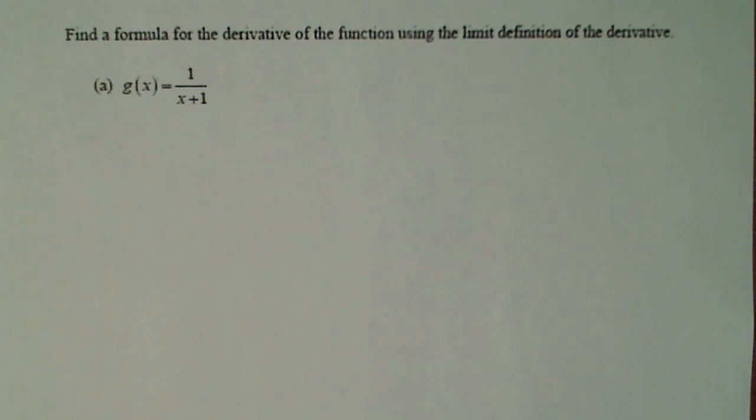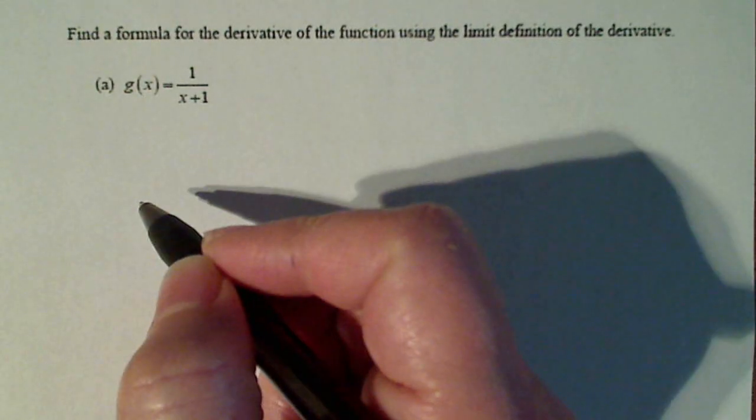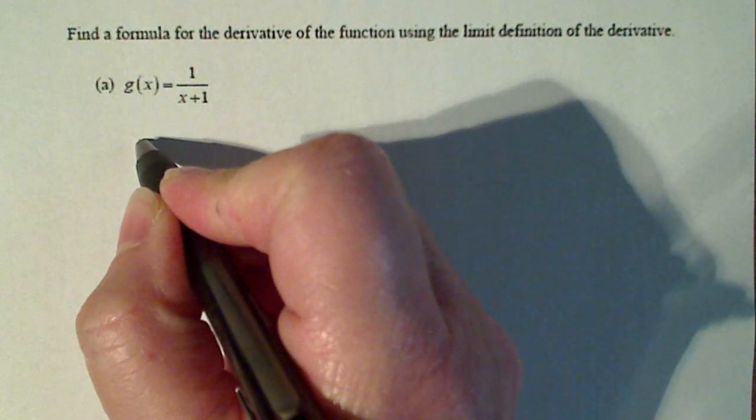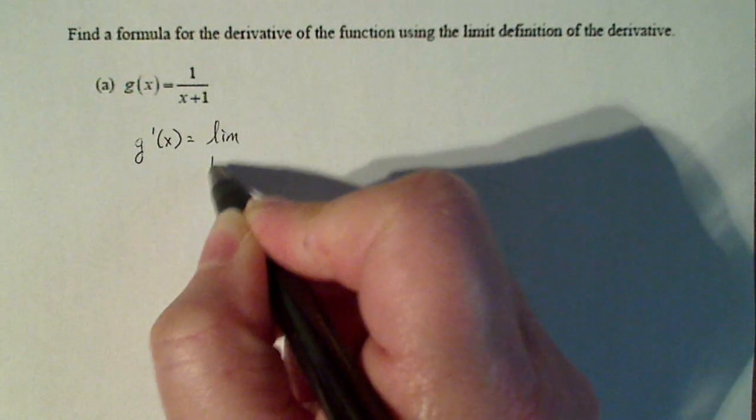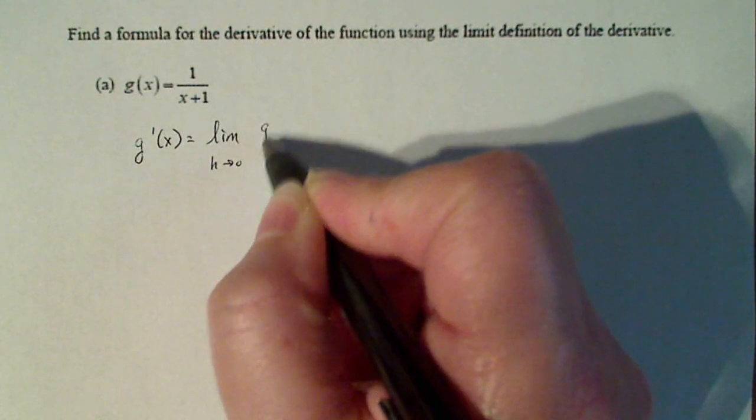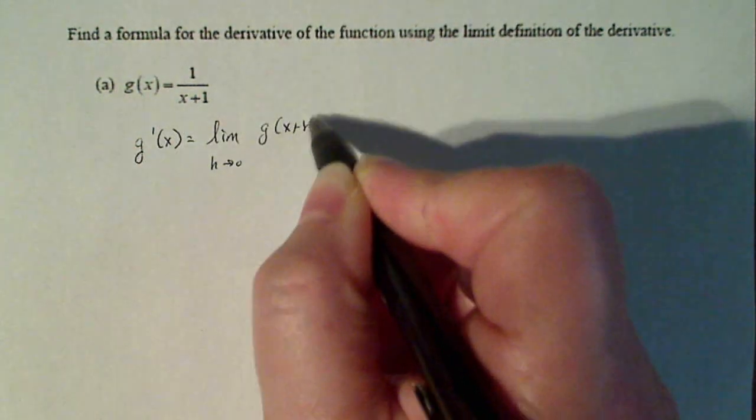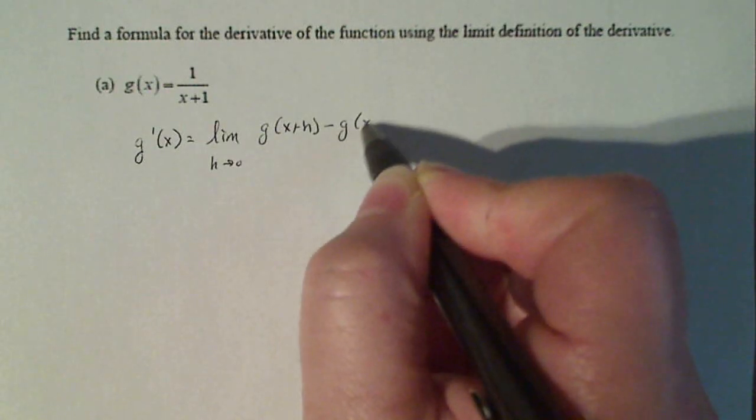A lot of students know how the shortcuts work, but don't know how the limit definition works. Well, literally by definition, g'(x) is defined as the limit as h goes to zero of [g(x+h) - g(x)]/h.